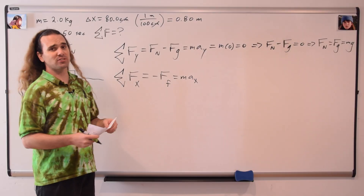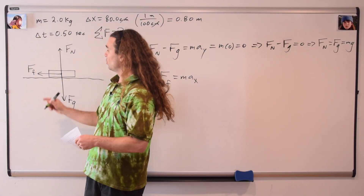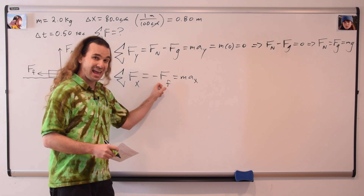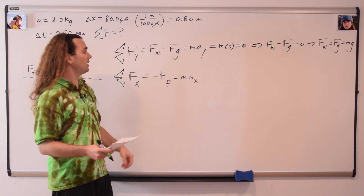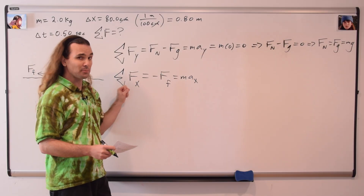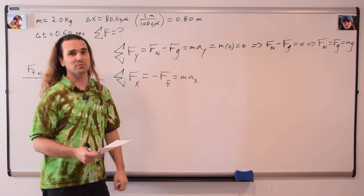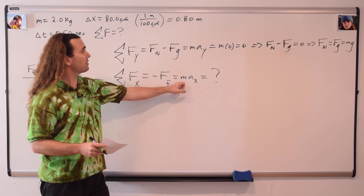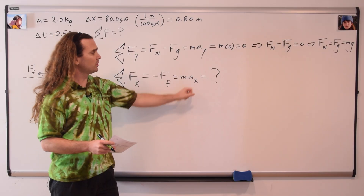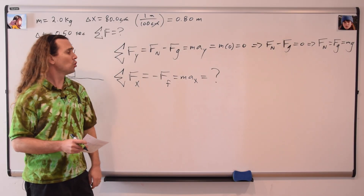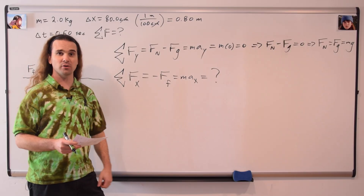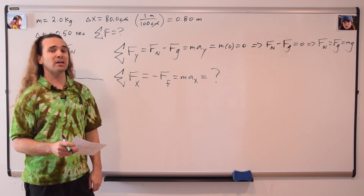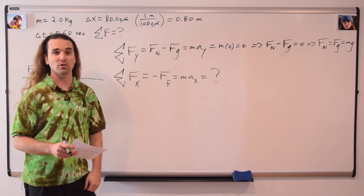Next, we sum the forces in the x direction. The only force acting in the x direction is the force of friction, and it's to the left, so it's negative. Therefore, the net force equals negative force of friction, which by Newton's second law equals mass times acceleration in the x direction. Our goal is to solve for the net force. We have the mass — 2.0 kilograms — so we simply need the acceleration. Since the force of friction is constant, the acceleration is constant and uniform, so we can use the uniformly accelerated motion equations.